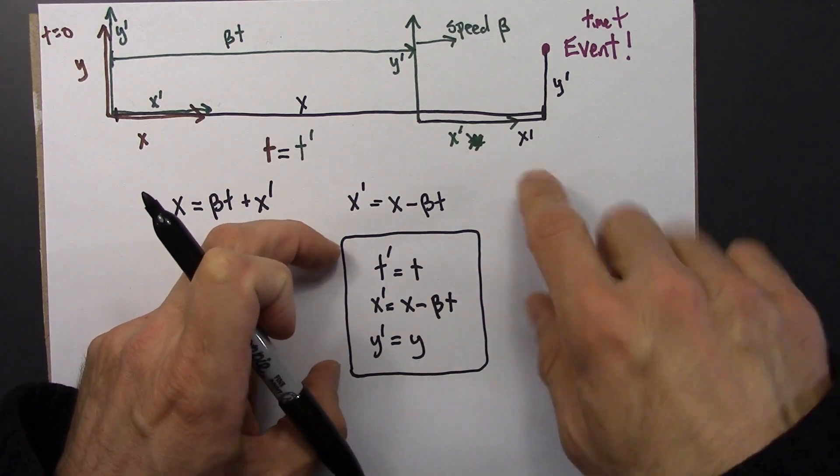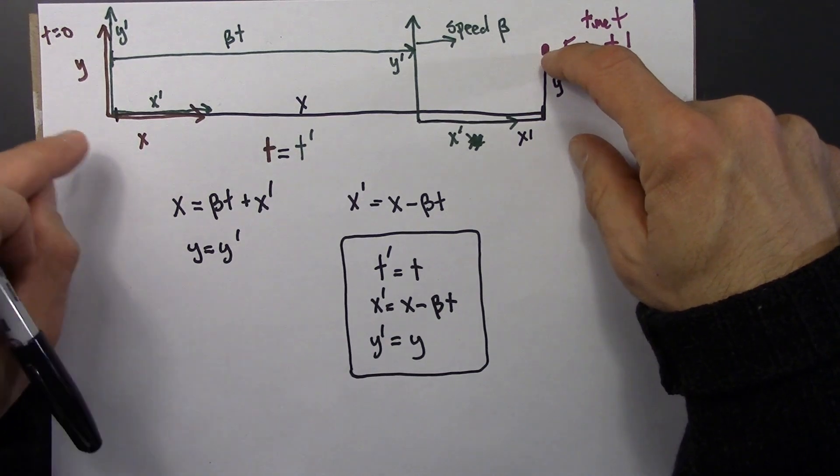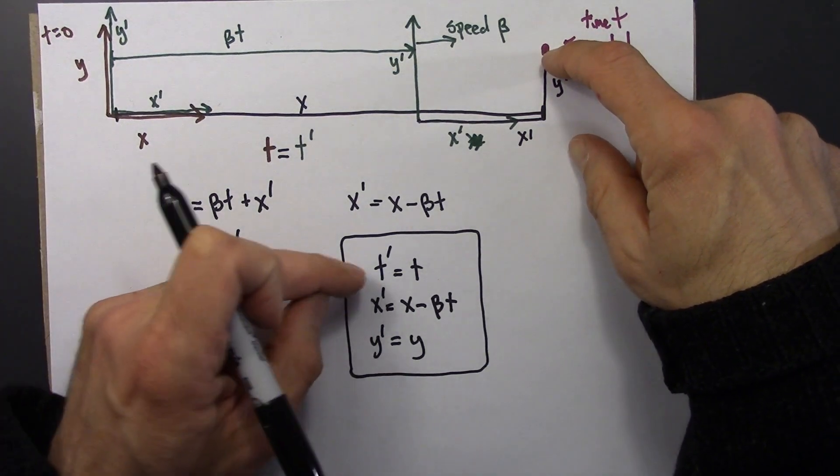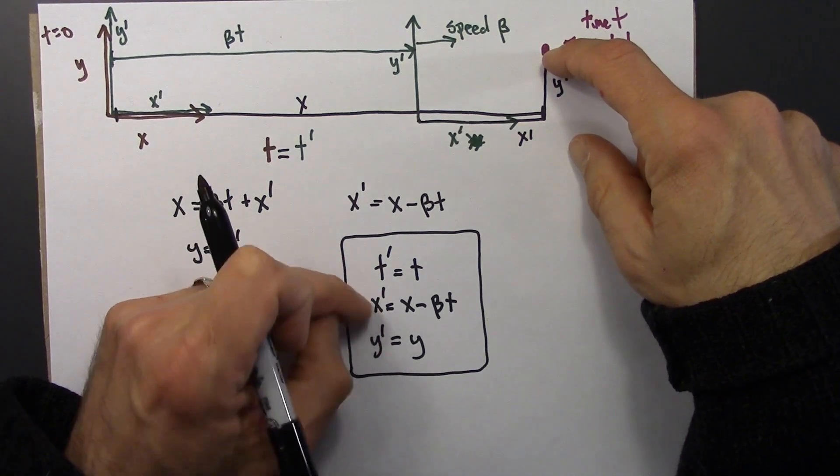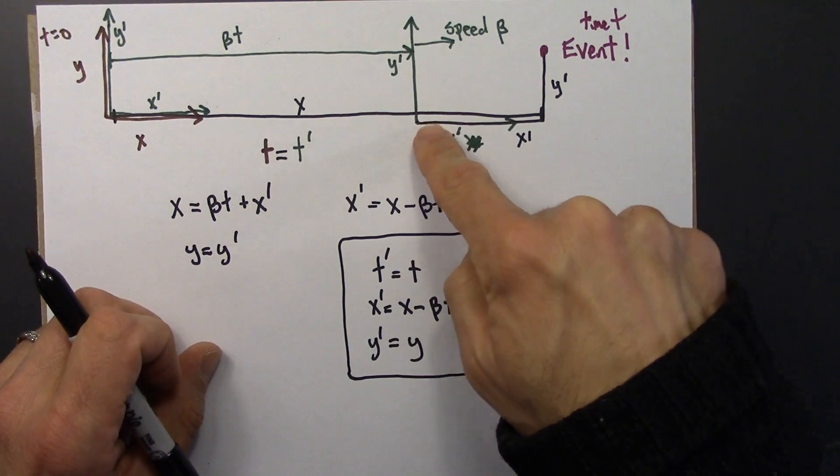If you know the space-time coordinates in terms of, say, x and y, you can convert that into space-time coordinates for x prime and y prime, what the moving frame, the green frame, what Bay would see. And vice versa. You can go in the other direction.